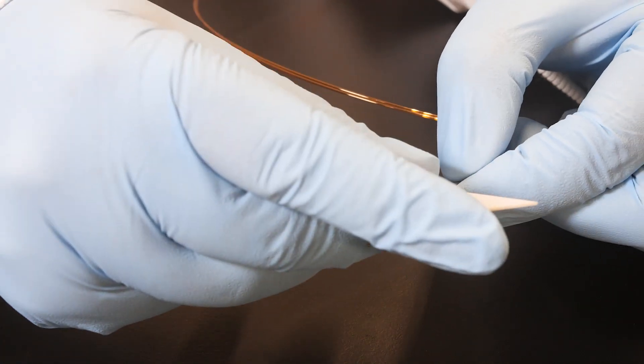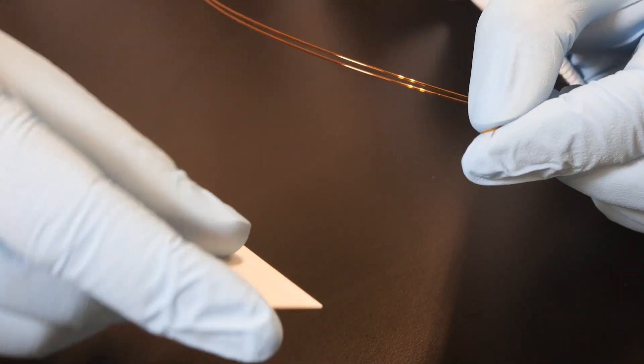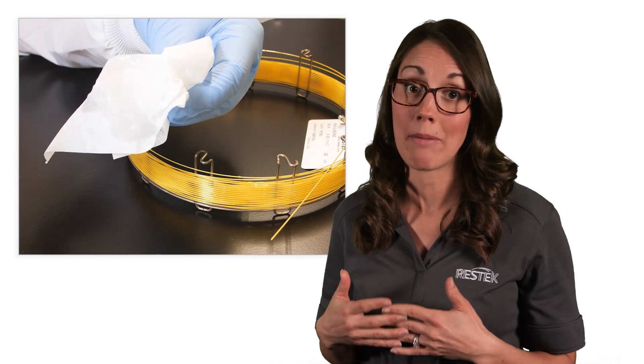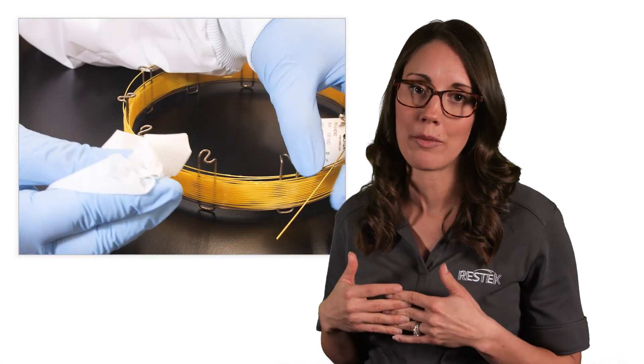We'll start by cutting the ends off of our GC capillary columns to create nice square edges. Once you have completed the cut, be sure to clean the end of the column using a lint-free wipe with a solvent like methanol or acetonitrile to remove any fragments.